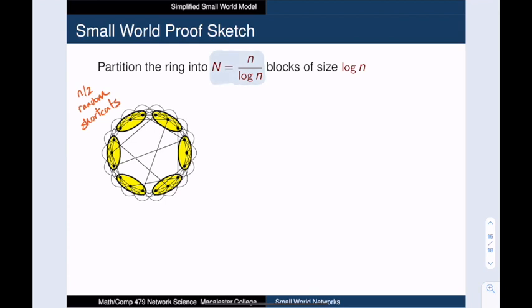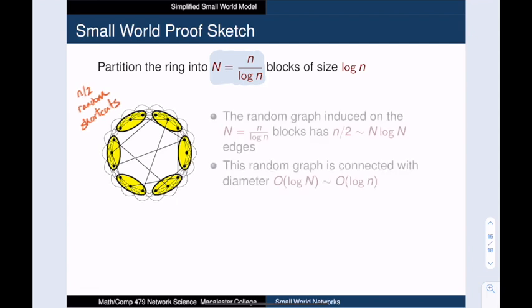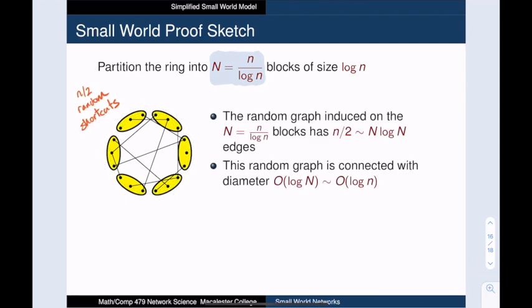Our n over 2 shortcuts become random edges between the block vertices. A simple argument shows that the little n over 2 is bigger than the capital N log capital N. We can then use two facts that we know about the Erdos-Renyi random graph. Number one, when the average degree is log the size of the graph, then the random graph is connected. And number two, the diameter of this connected Erdos-Renyi random graph is at most the log of the size of the graph.